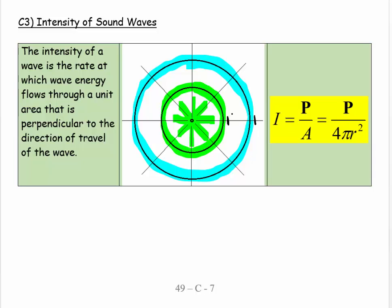We say the intensity of a wave is the rate at which wave energy flows through a unit area that is perpendicular to the direction of the traveling wave. So the traveling wave is traveling out in those directions, and we put this little 1 meter squared area there.